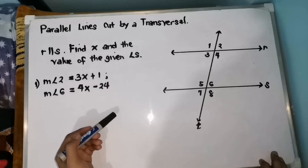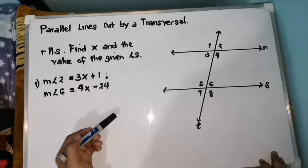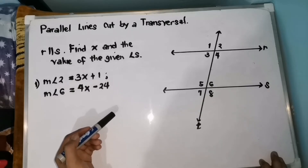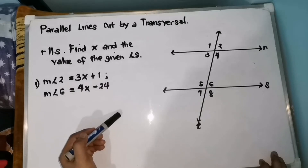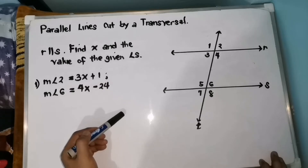Corresponding angles are congruent. Alternate interior angles are congruent. Alternate exterior angles are congruent. Same side interior angles are supplementary.